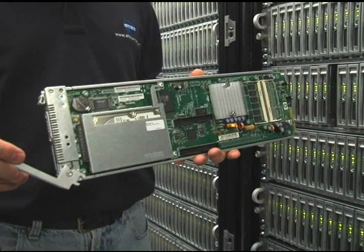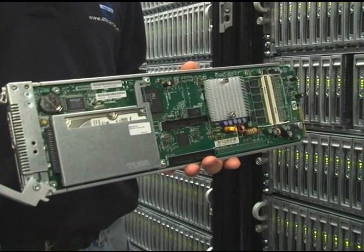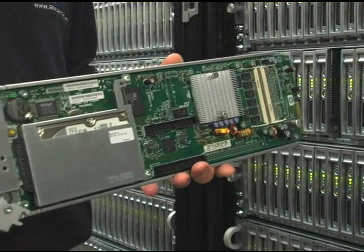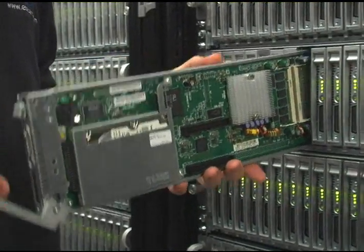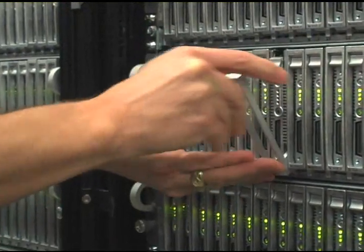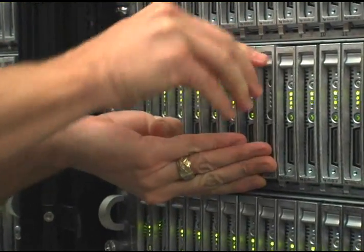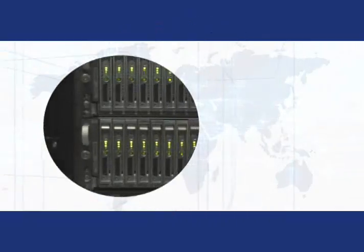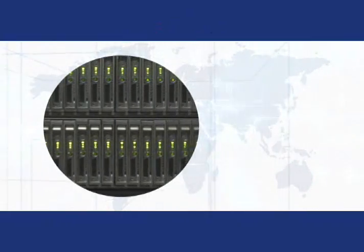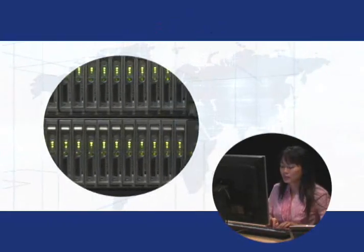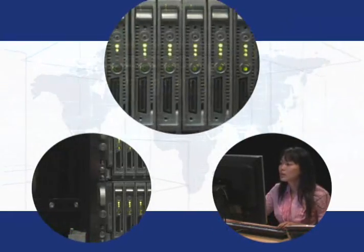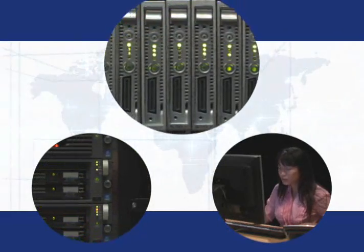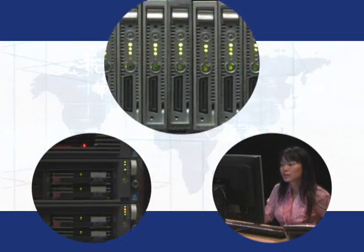Each of these blades contains a standard desktop OS and the applications the worker has always used. The Blade PC has two network connections — one carrying data between the Blade and the user, and one carrying data between the Blade and the network storage where files reside.